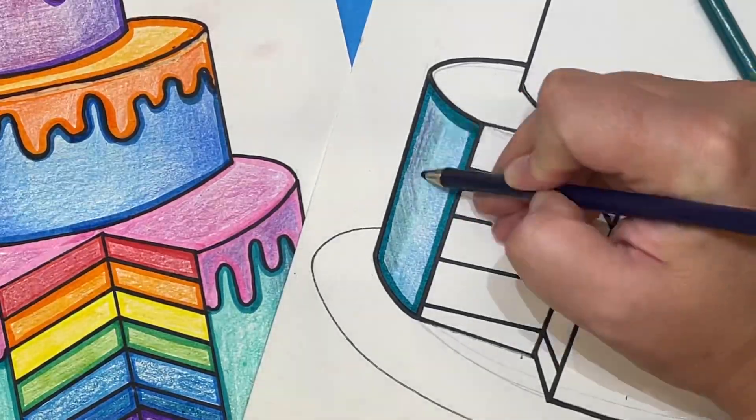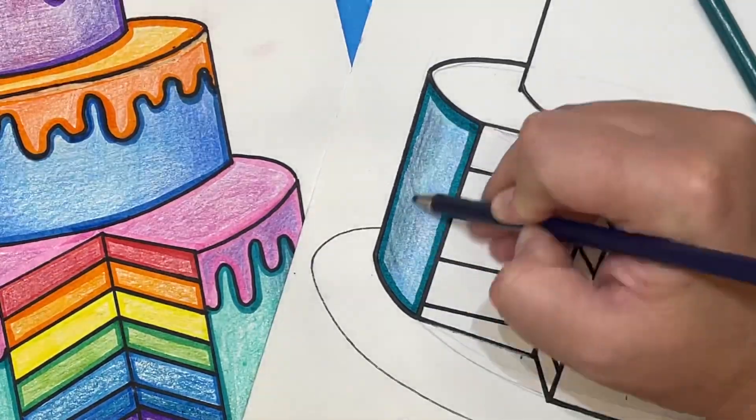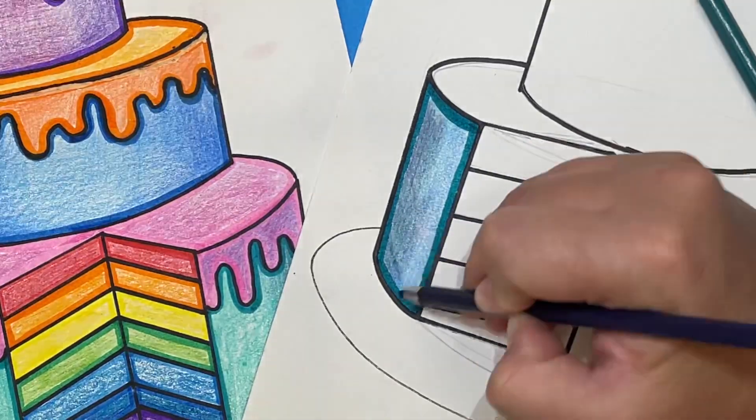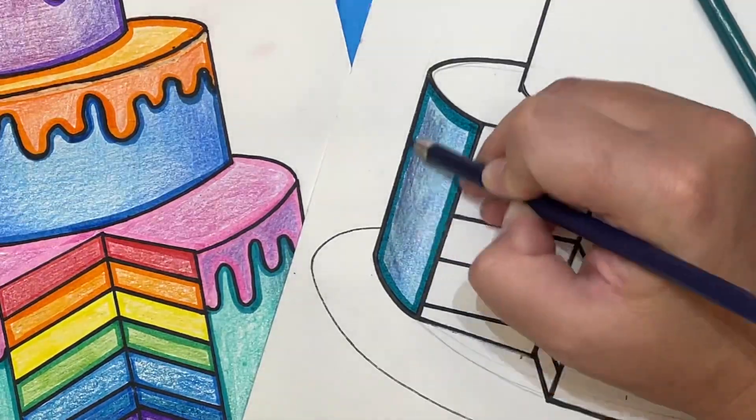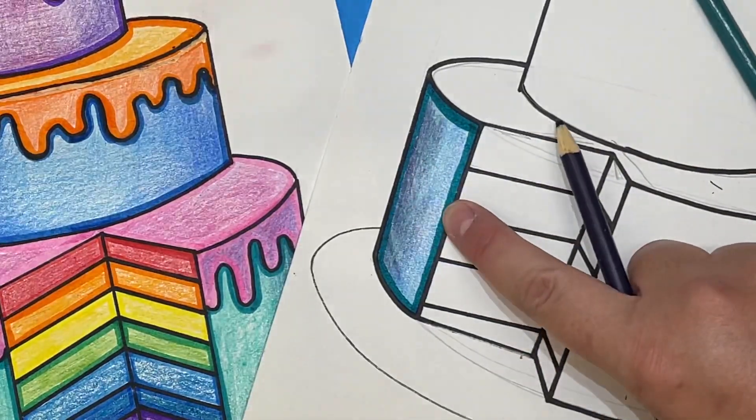Diagonal, side to side, up and down. I don't want to see any pencil marks. Okay, now the side of my cake is darker than the inside.